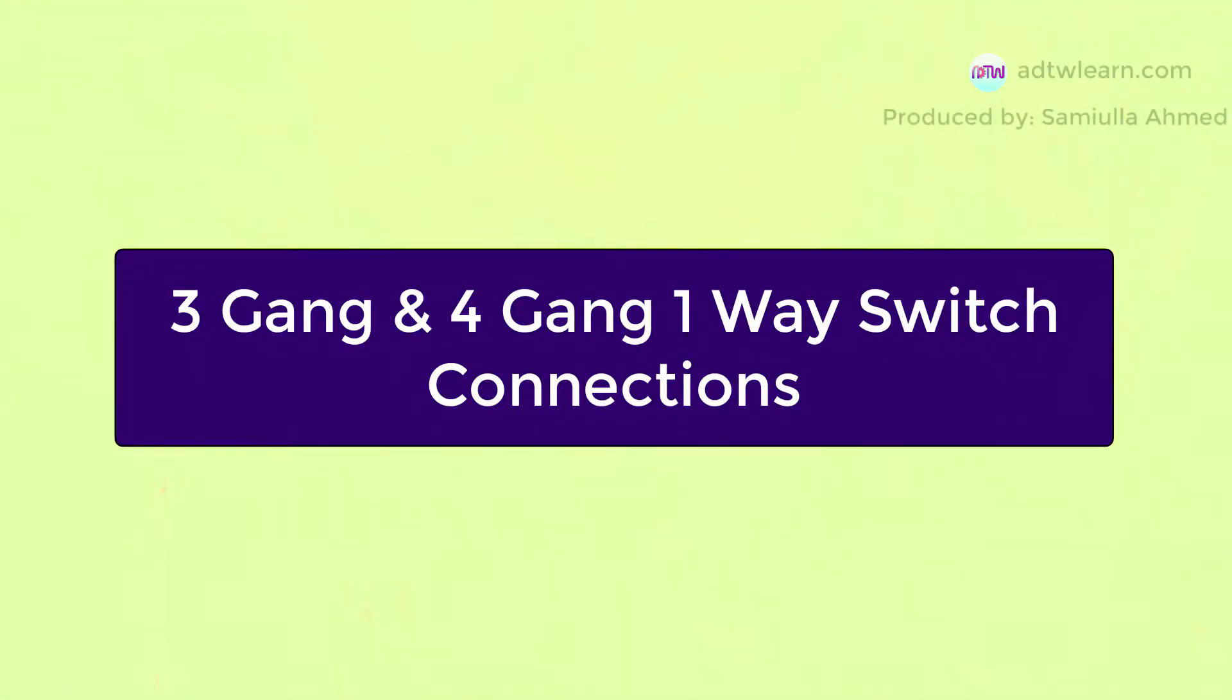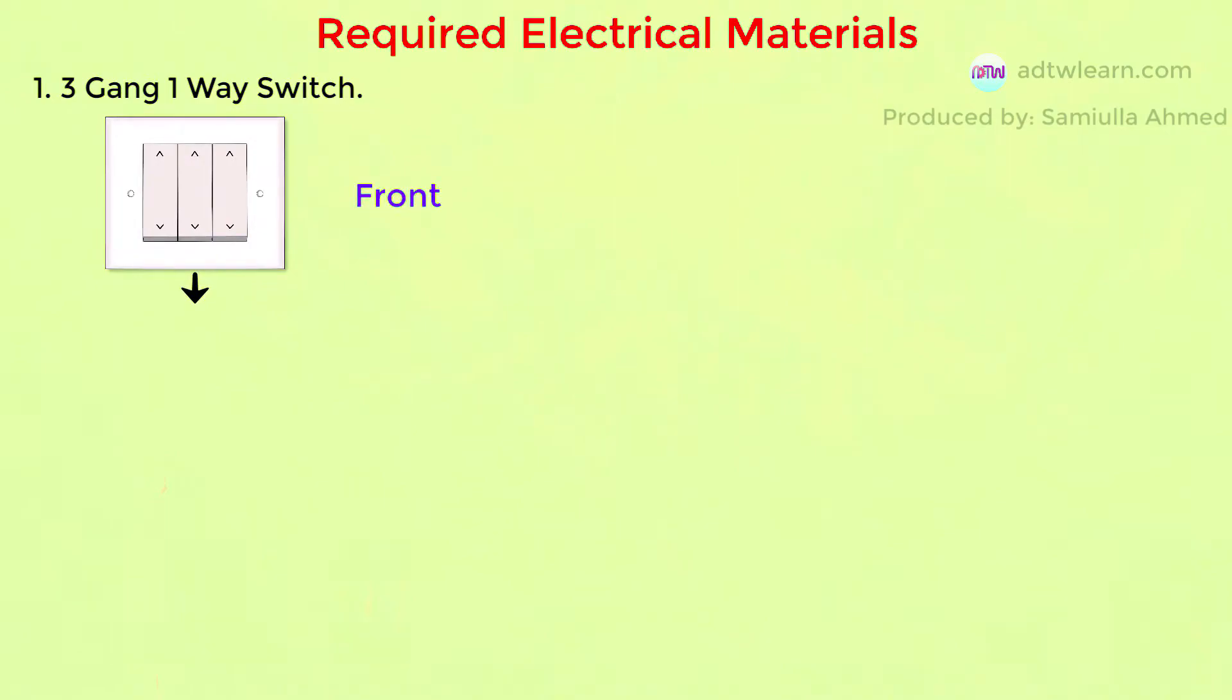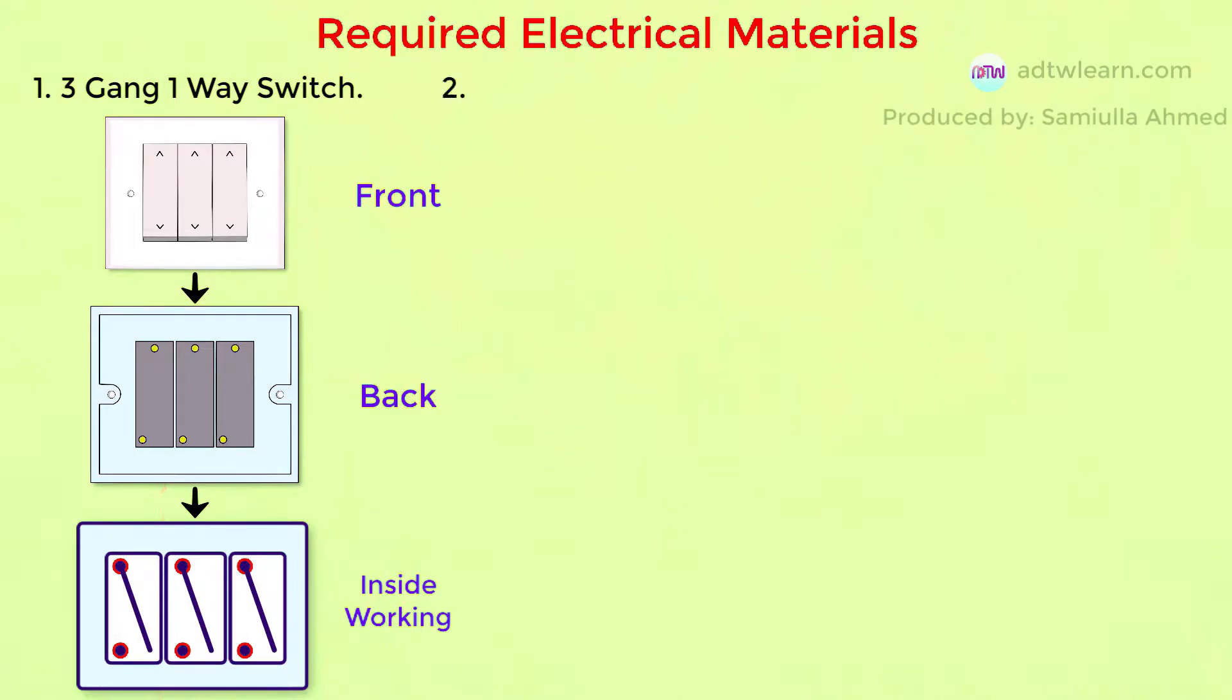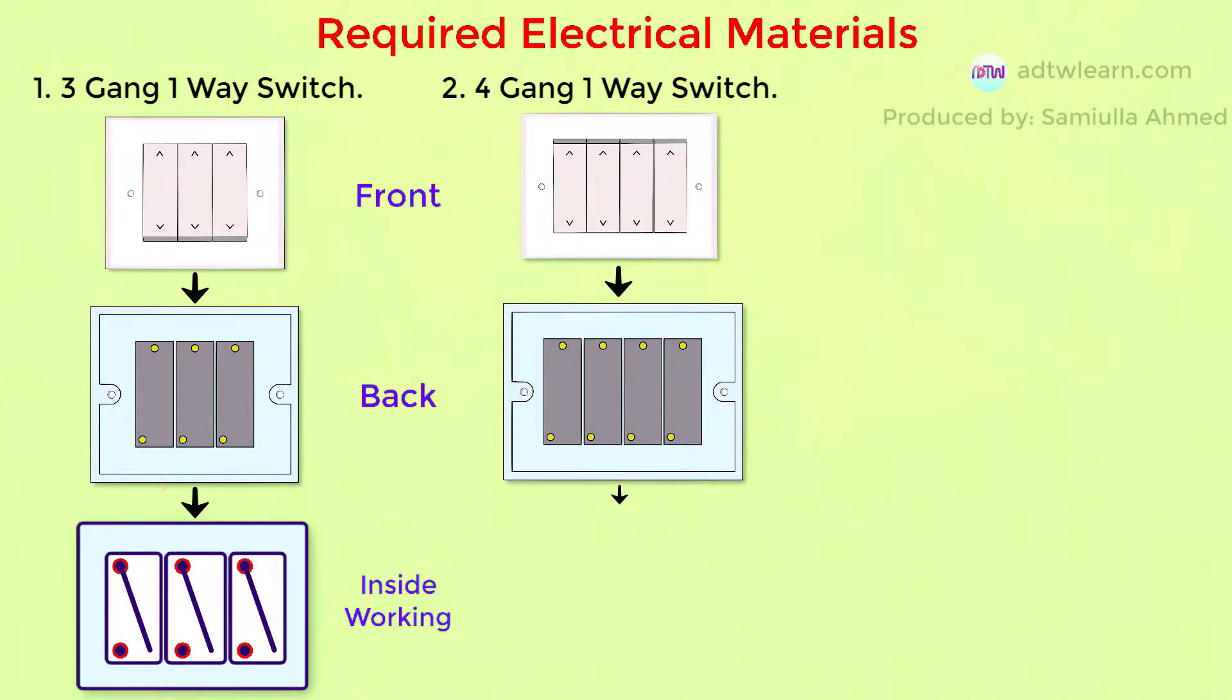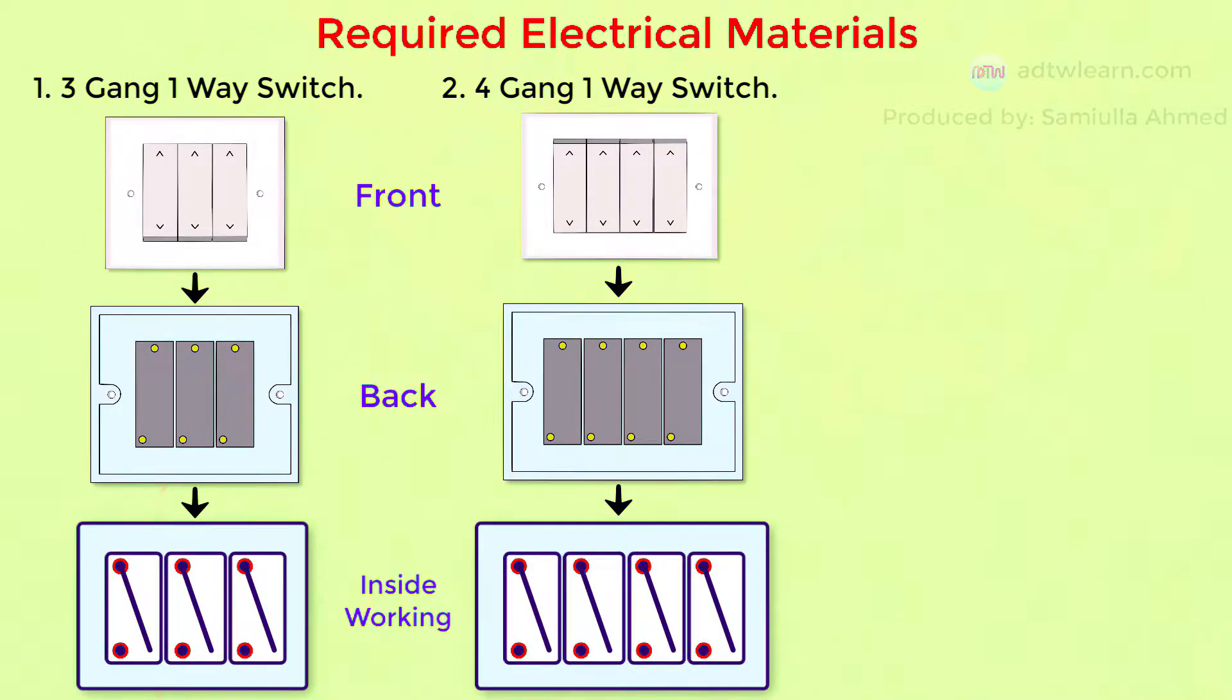Three gang and four gang one-way switch connection. Required electrical materials: three gang one-way switch - this is the front side, this is the back side, and this is the inside working. Four gang one-way switch - front side, back side, and inside. Bulbs and bulb holders.